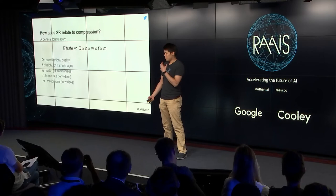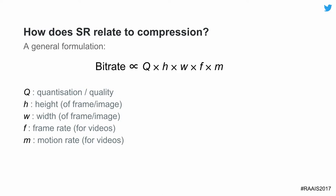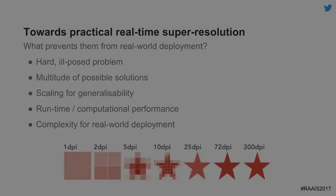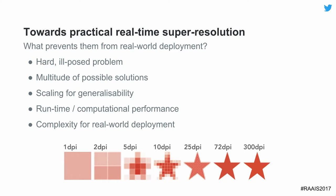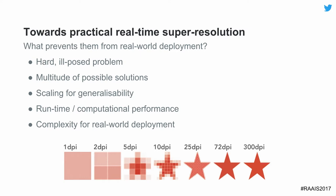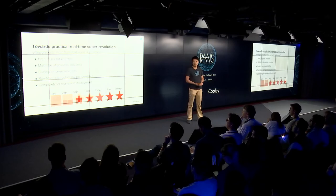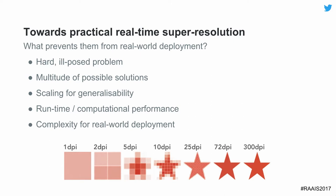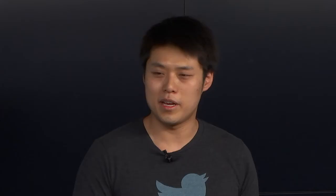This all assumes the super resolution algorithm can actually restore resolution to high enough fidelity. There are real-world problems: it's a hard, ill-posed problem. There are multitudes of different solutions when going from low-dimensional to high-dimensional space, plus challenges around how well it generalizes to different content and runtime complexities.